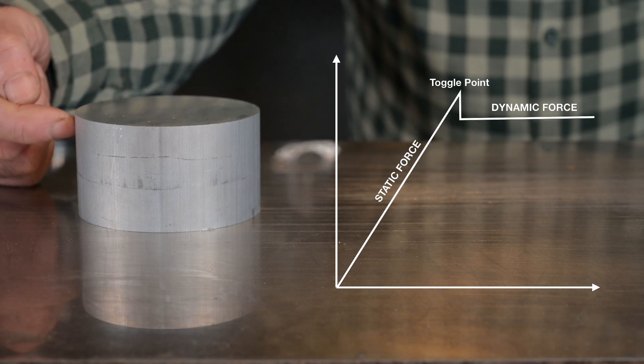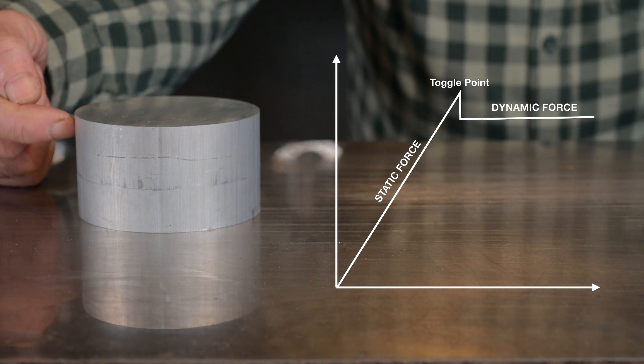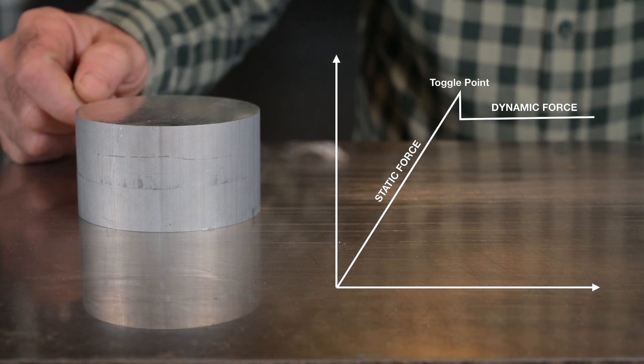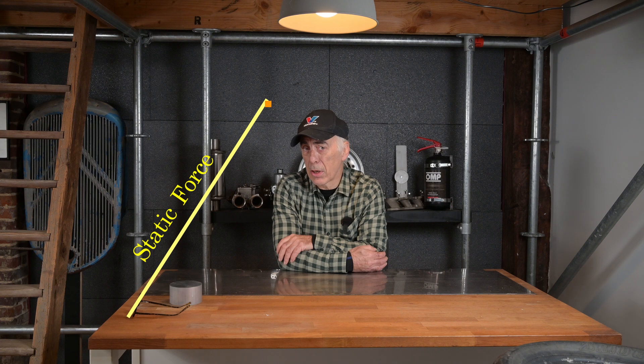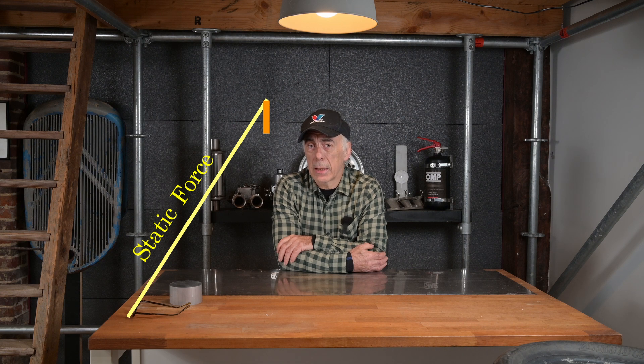The point from which you start pushing until the object begins to move is the static force. Once the object moves, we call it a dynamic force. If you draw a curve of the force applied, it starts at zero, builds linearly, then at some point you overcome friction and the object starts to move — after which the force required drops and you can keep it moving with an almost steady force. That linear portion is the static force; the portion after the peak is the dynamic force.